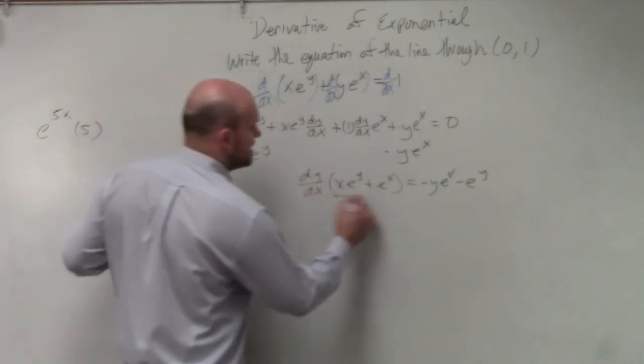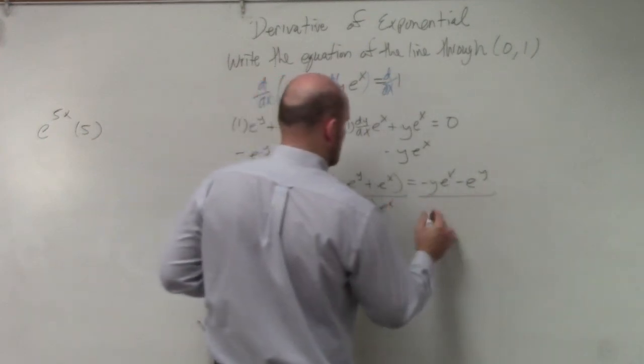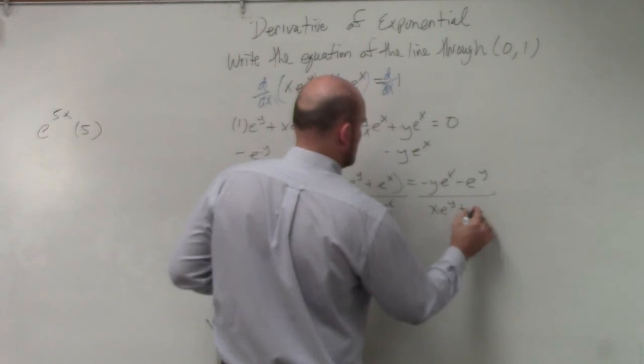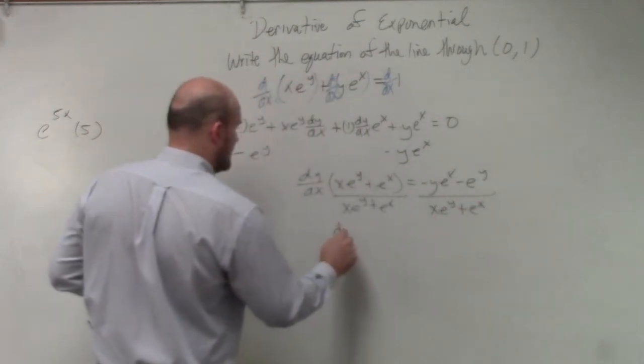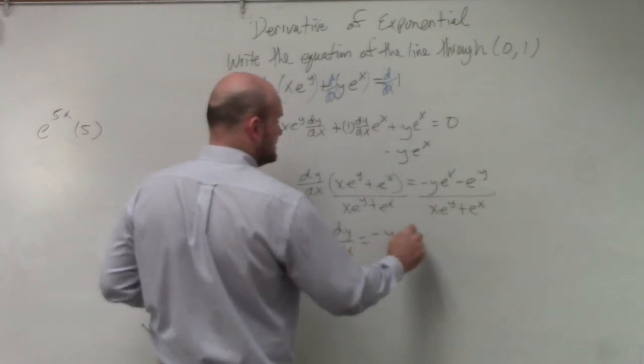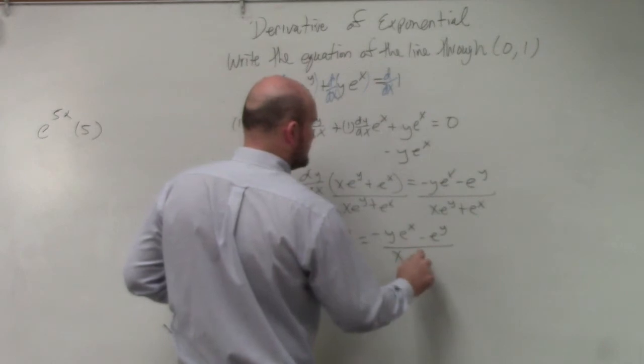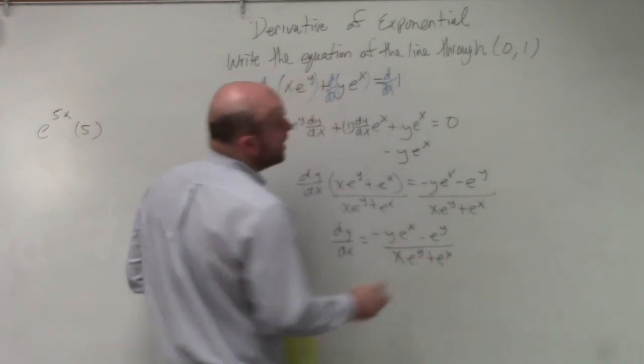So now we just solve for dy dx. So I'll just divide by e to the y plus e to the x. And we're doing dy dx is then equal to negative y e to the x minus e to the y all over x e to the y plus e to the x. However,